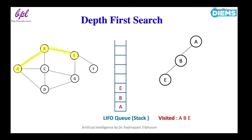Node E has only two adjacent nodes: node F and node G. Let us select node F. F is not a goal state, so it will be added to the stack, expanded, and added to the visited list. Note that there is only one adjacent node to node F, which is node E, and node E is already visited. So node F is completely expanded, meaning we have reached the deepest level and it does not have any successor.